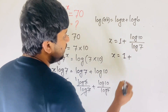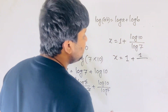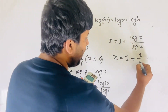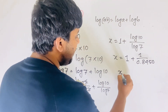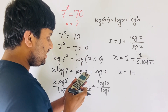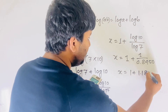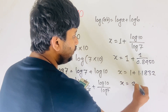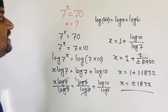log10 is approximately 0.845, so x equals 1 plus 0.845 divided by... giving 1.1832. Adding 1, our final answer is x is approximately 2.1832.